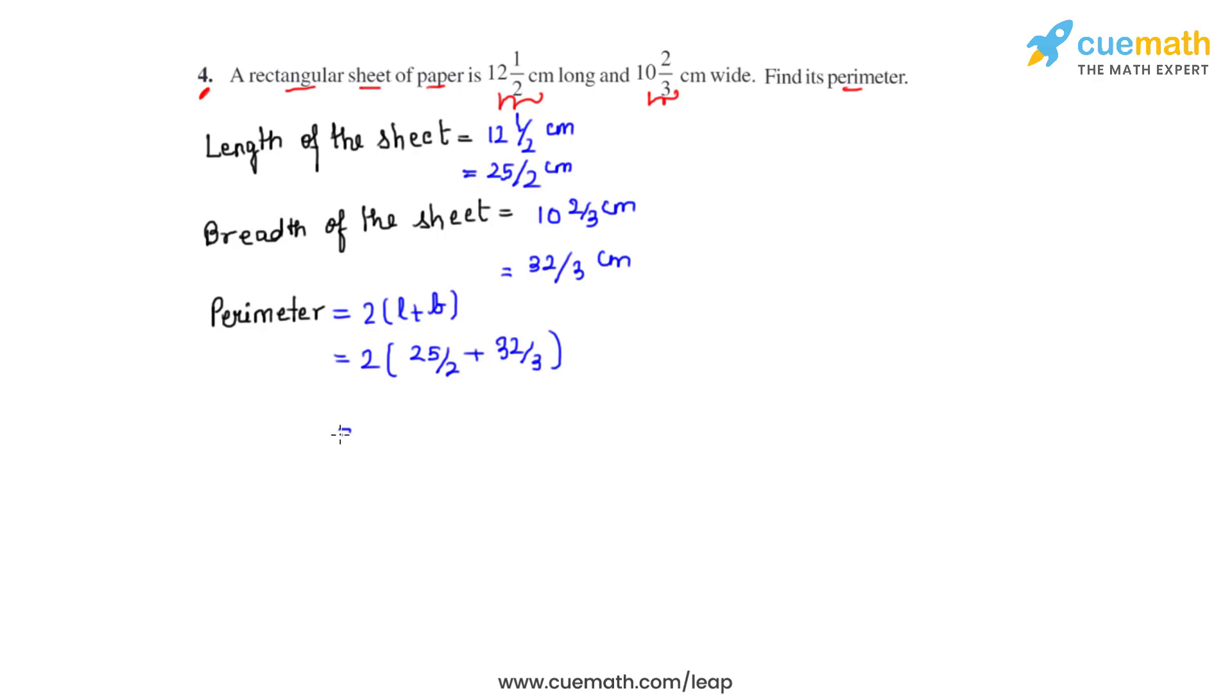So what we can see is that for the two fractions the denominator is not same or they're unlike fractions. So we'll have to make the denominator same and the LCM for 2 and 3 is 6. So to make the denominator 6 for the first fraction, we'll have to multiply the numerator and denominator with 3. So 25 times 3 gives us 75 and 2 times 3 gives us 6.